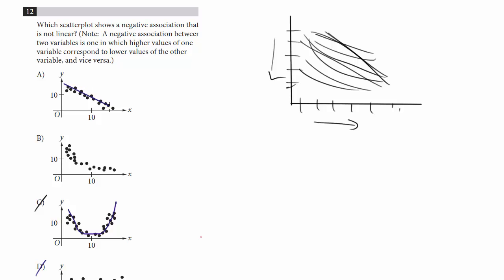Notice A, you can get like a curve like that, and B would look something like that. So they're both negative associations, but which one do we want? We want one that's not linear. So we do not want this line. We want the one that's curved, which is choice B.